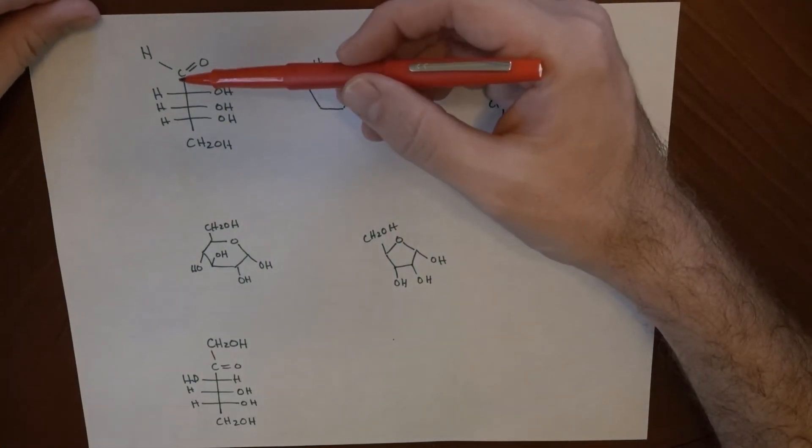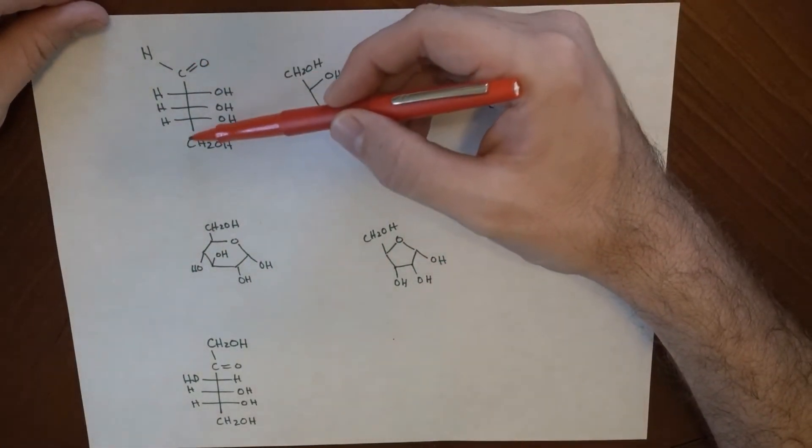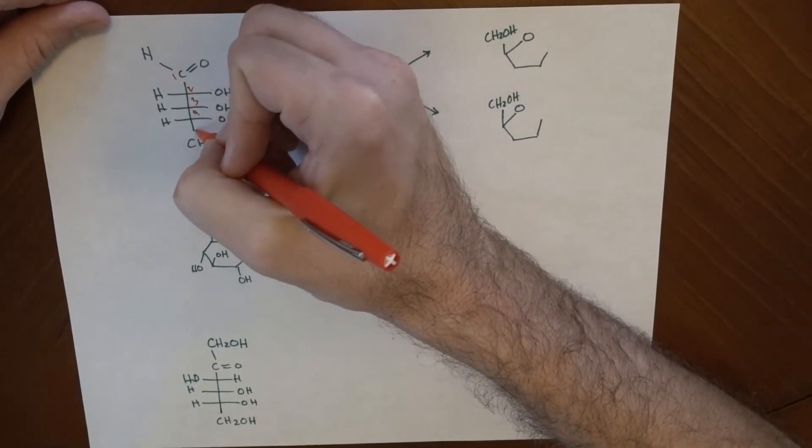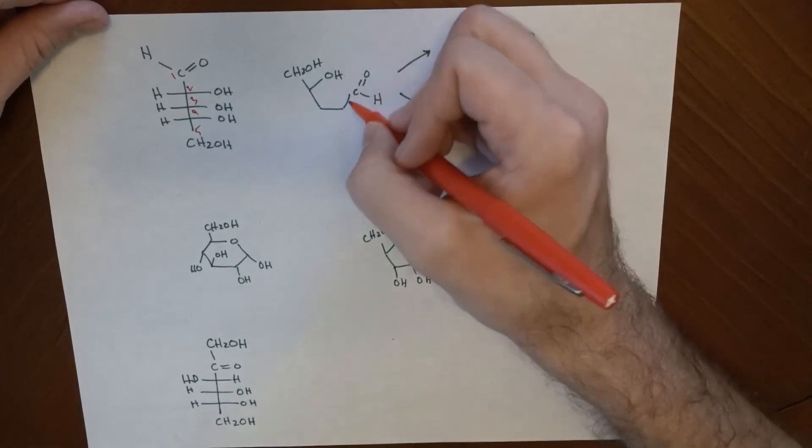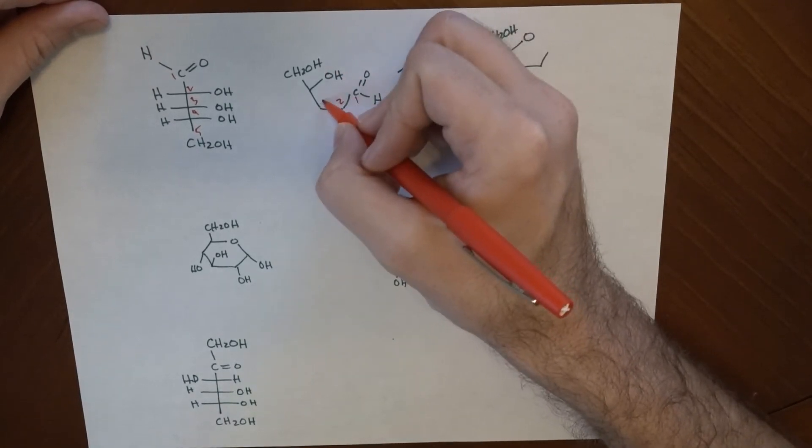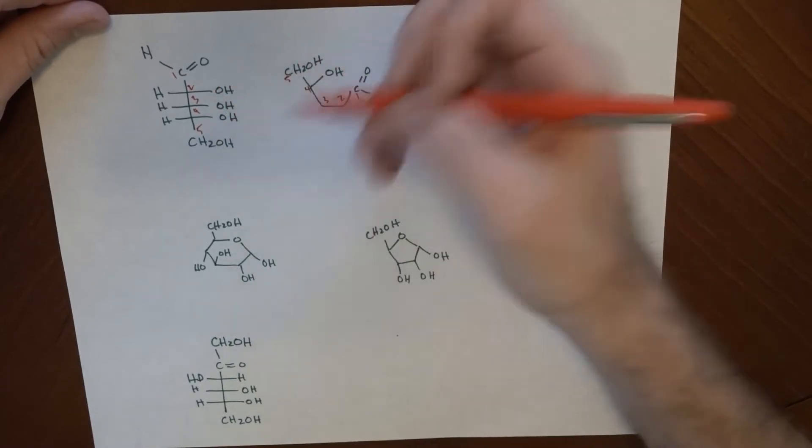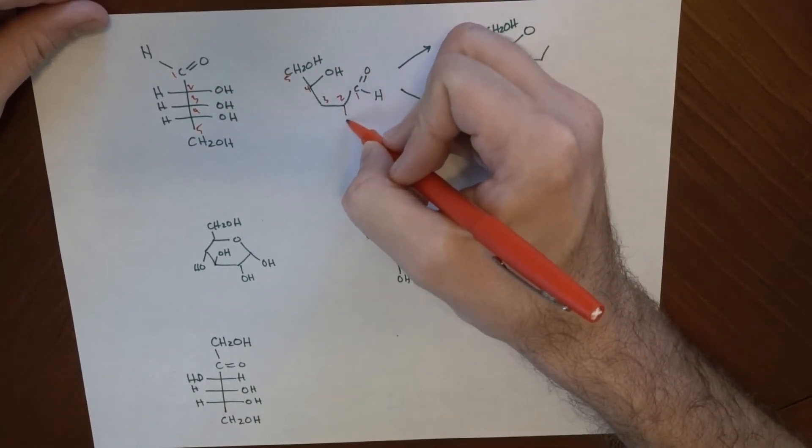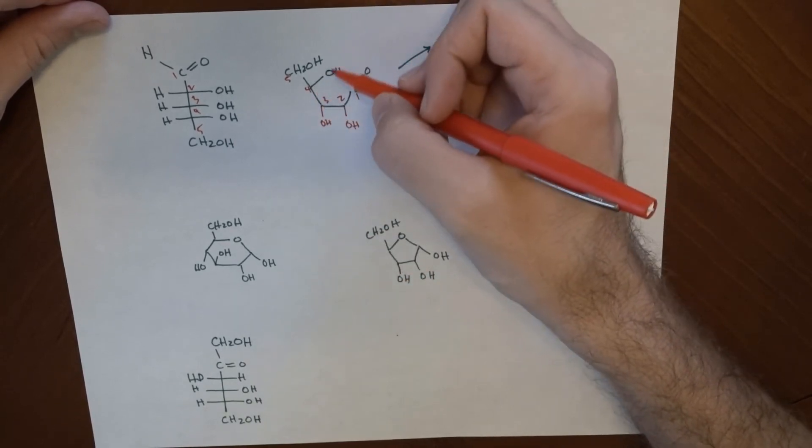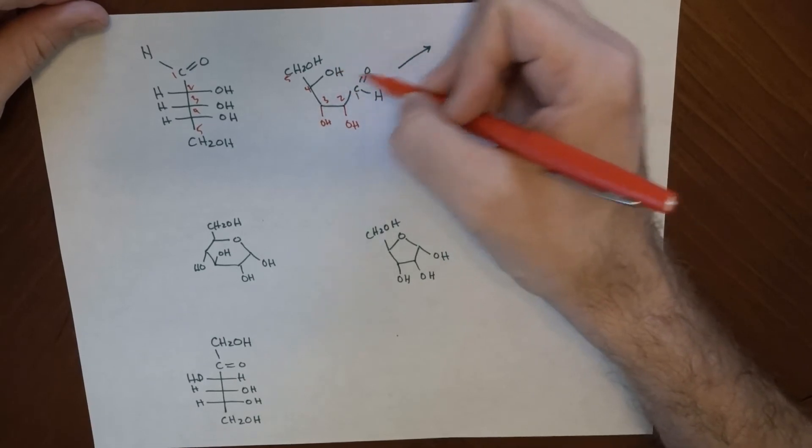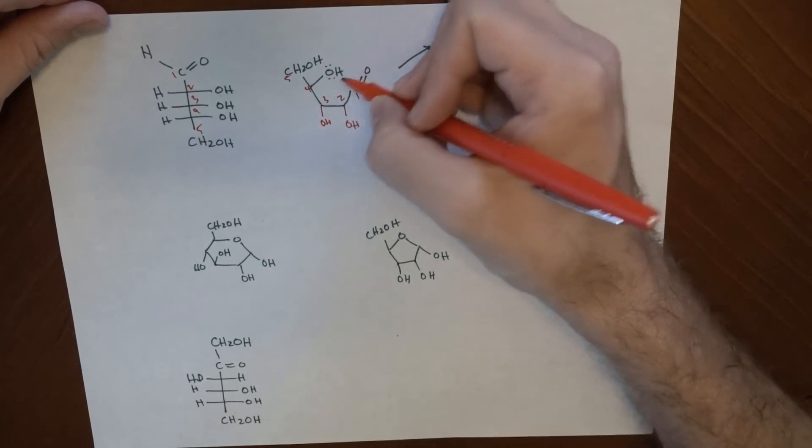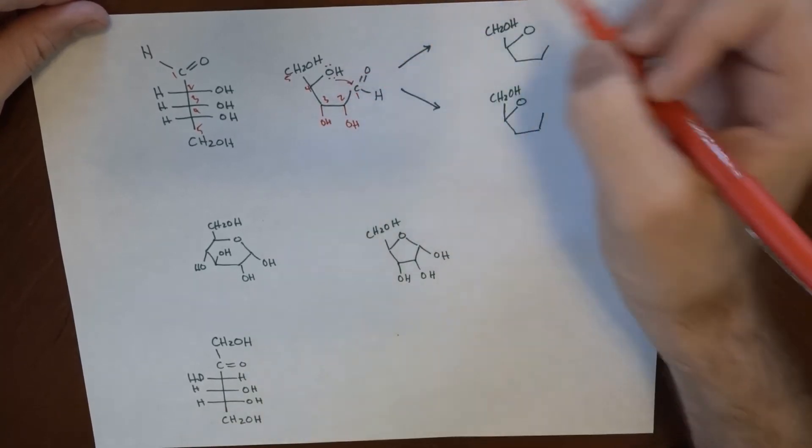Now, an aldopentose has 1, 2, 3, 4, 5 carbons. So, just numbering from the top, 2, 3, 4, and 5. All these OHs are on the same side, so I'm going to have them pointing down. Carbon 4's OH is the one that's going to be doing the attacking. It's got a spare pair of electrons here. It's going to end up attacking at this point.